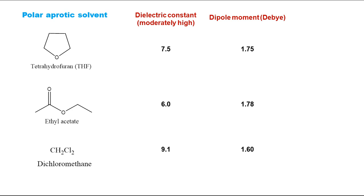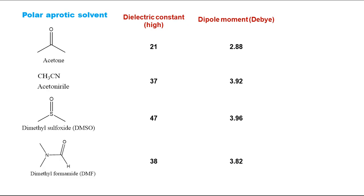For polar aprotic solvents, there are two lists. The first list has moderately high dielectric constants — less than 10 — and dipole moments greater than 1 but not very high. These are very good solvents for reactions where active hydrogens like O-H or N-H are not required. The second list has very high dielectric constants — greater than 20 — compared to both non-polar and the first polar aprotic group.